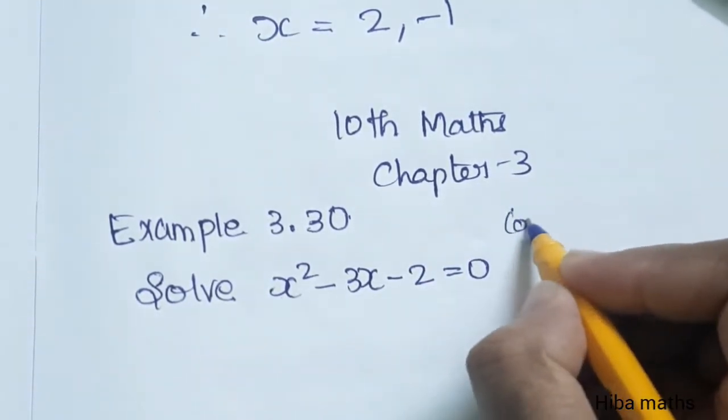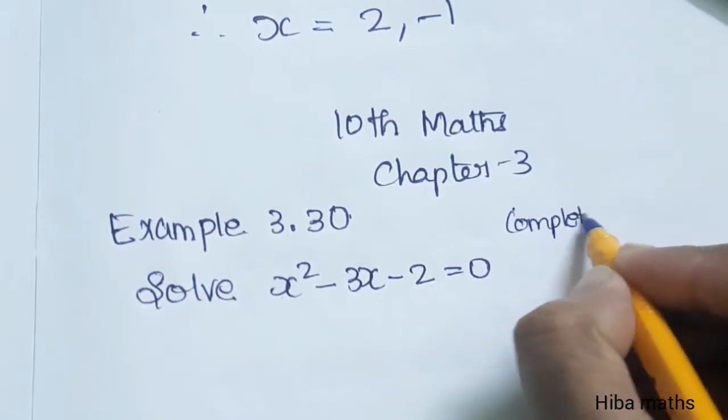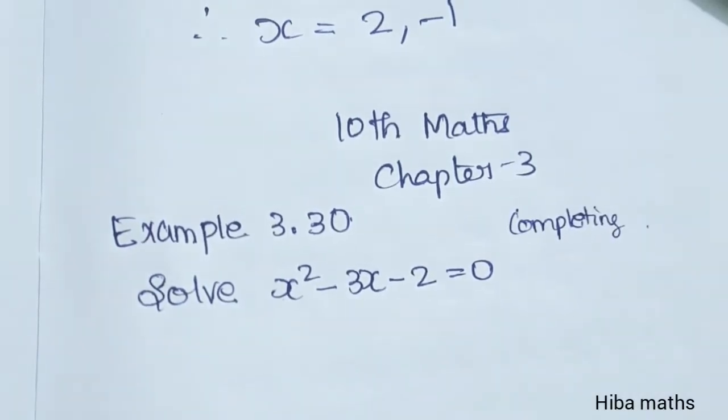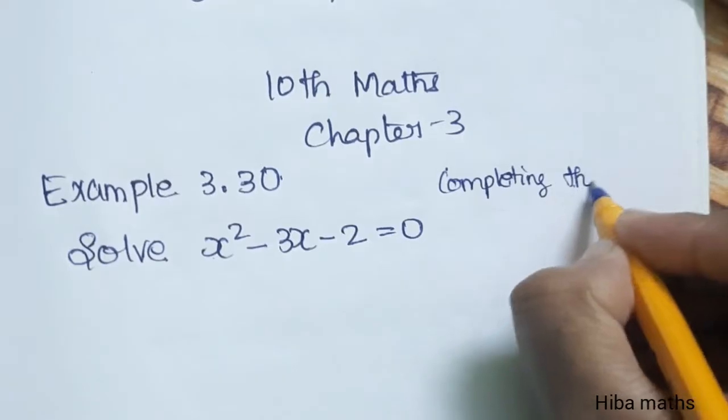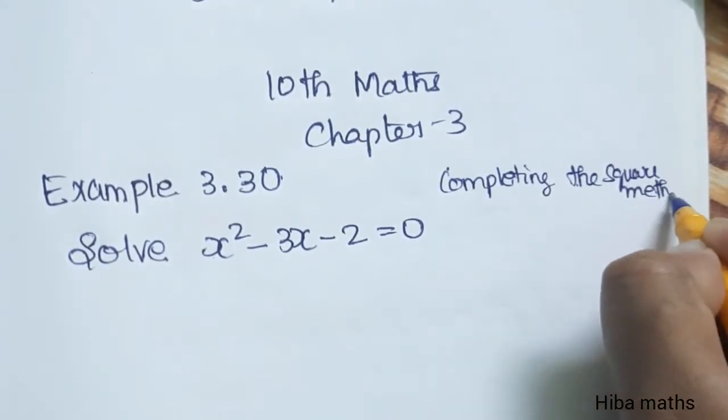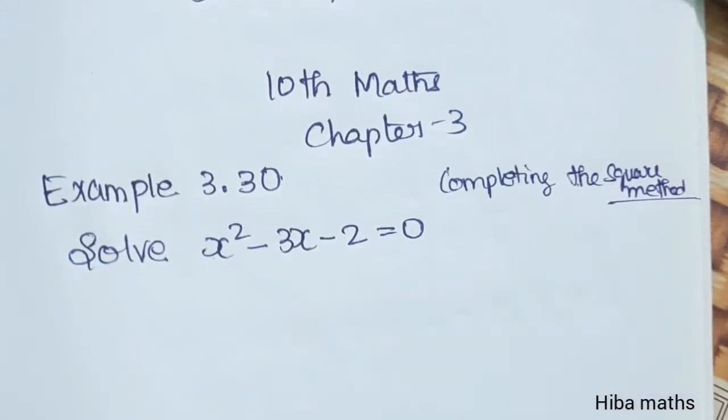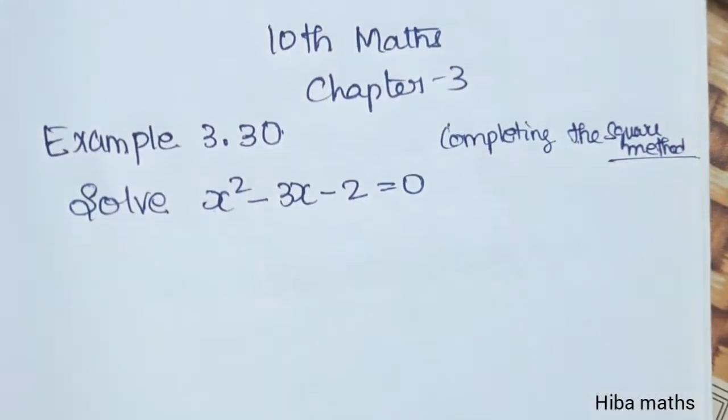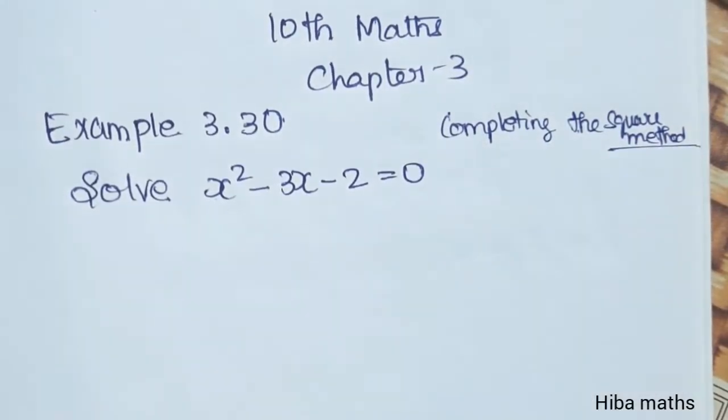we use a method called completing the square method. This is the most important exercise. In this example, there are 3 steps.